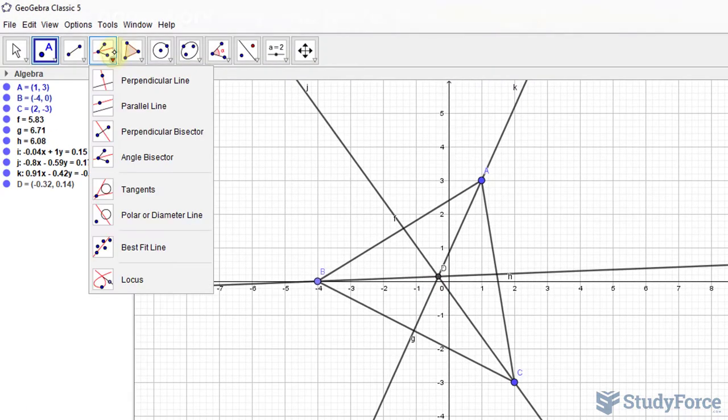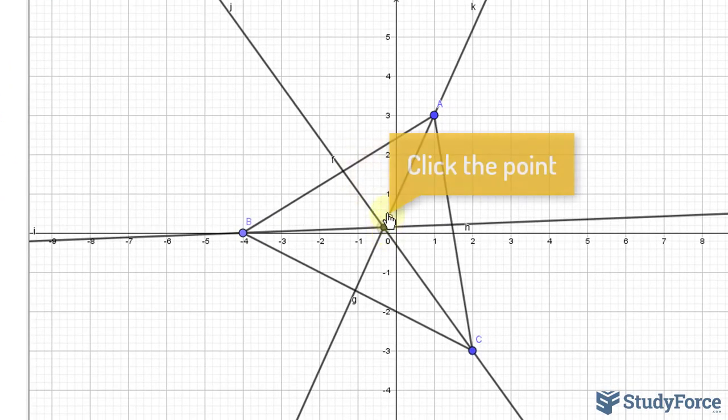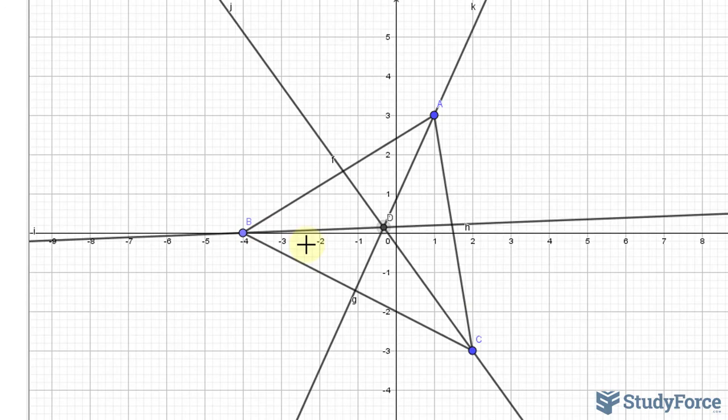And lastly, using the perpendicular line tool, I'll create a perpendicular line that passes through D and any one of the sides of this triangle. So I'll select side B, A randomly.